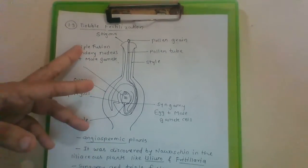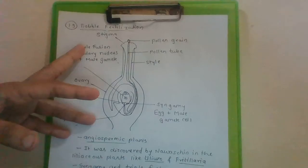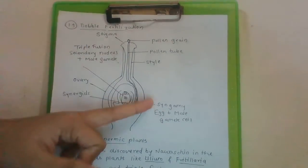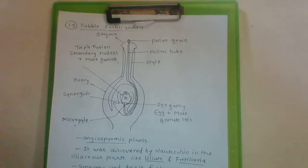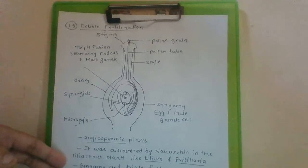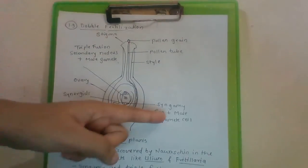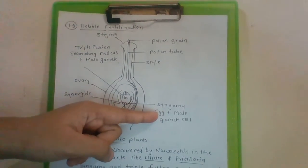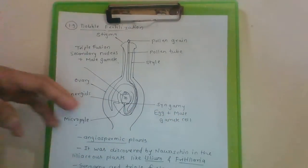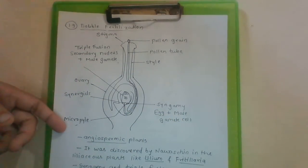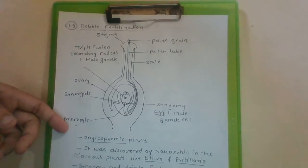Now there are two processes carried out in double fertilization. First is syngamy, second is triple fusion. Syngamy is the fusion of haploid male gamete with haploid female egg. The process is called syngamy to produce a diploid zygote.